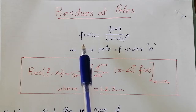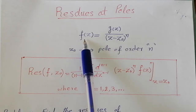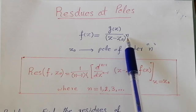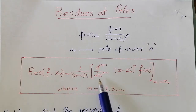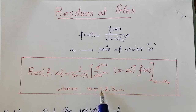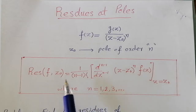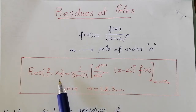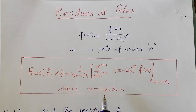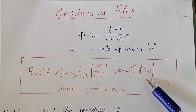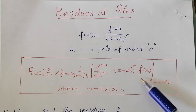In my previous lecture we studied that if we are given a function f of z which has a pole z₀ of order n, then we can use this formula to find the residue of this function. If I put n equal to 1, I get the residue at a simple pole; n equal to 2 gives the residue at a pole of order 2, and n equal to 3 gives the residue at a pole of order 3. So we can use this formula to find the residue of any function which has poles.